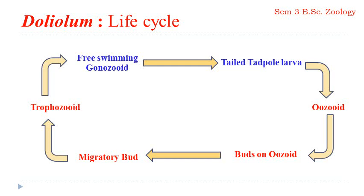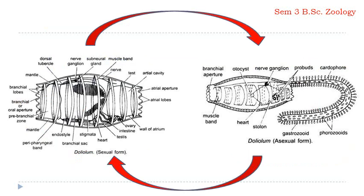Two different forms exist — one is sexual and the other is asexual — so there is an alternation of generation. Doliolum is unique in having alternation of generation between the sexual gonozoid phase and the asexual ozoid phase, or between the solitaria and gregaria phases.